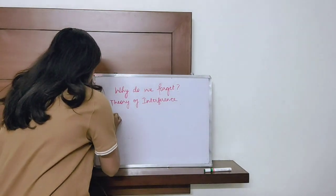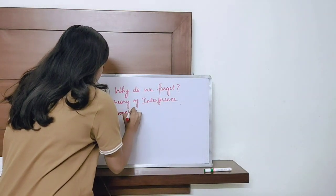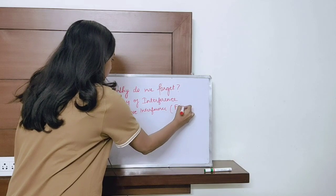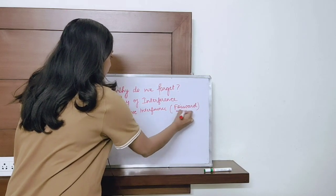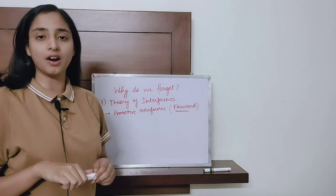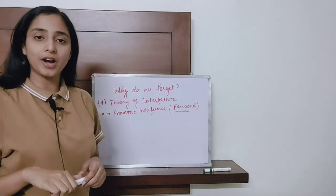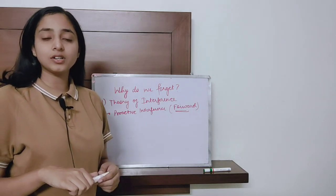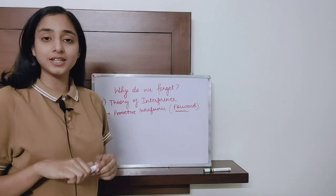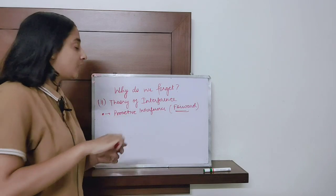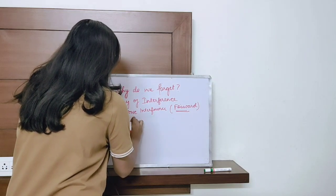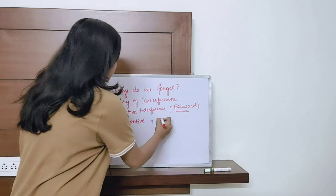There are two types of interference. The first is proactive interference, also known as forward interference. It means that something we learned in the past interferes with our learning in the future. For example, if I know English and I find it difficult to learn French because I get confused between English and French words, that is an example of proactive interference.